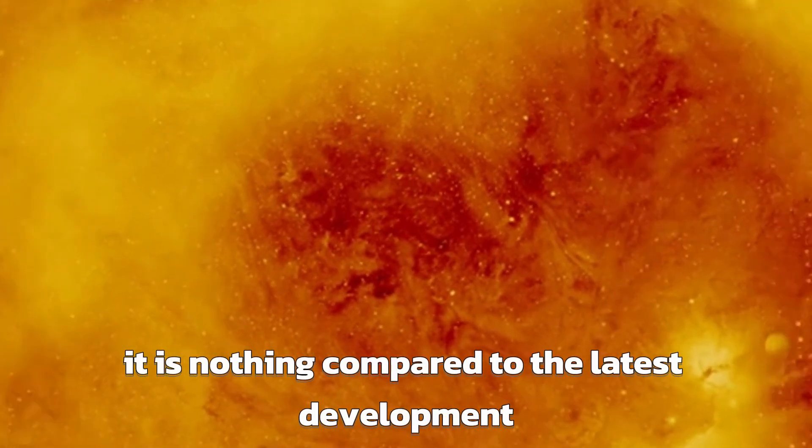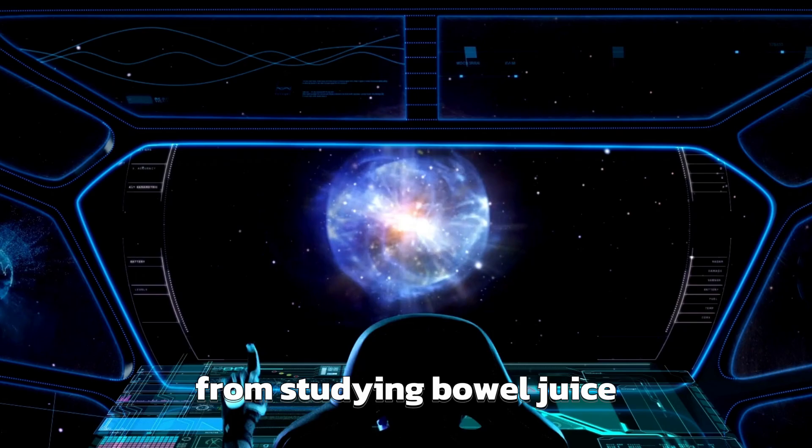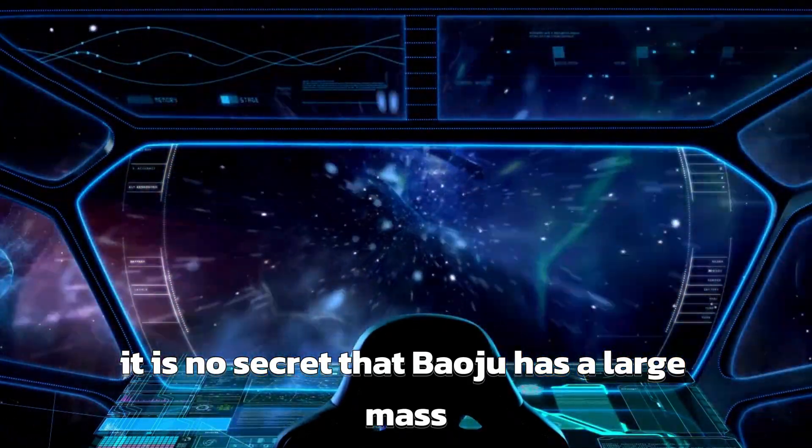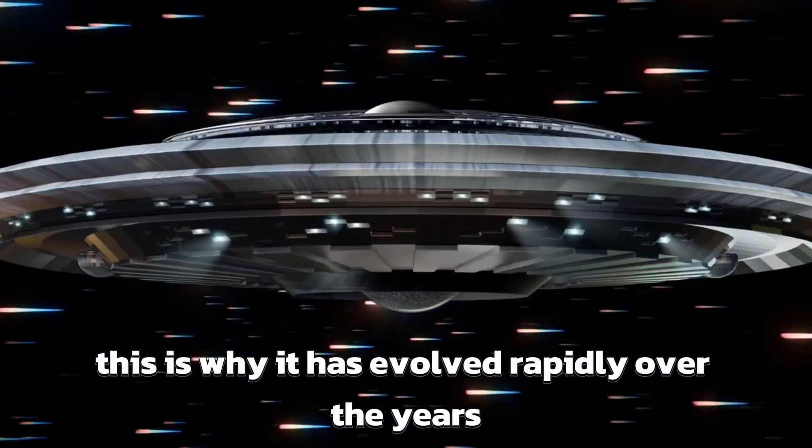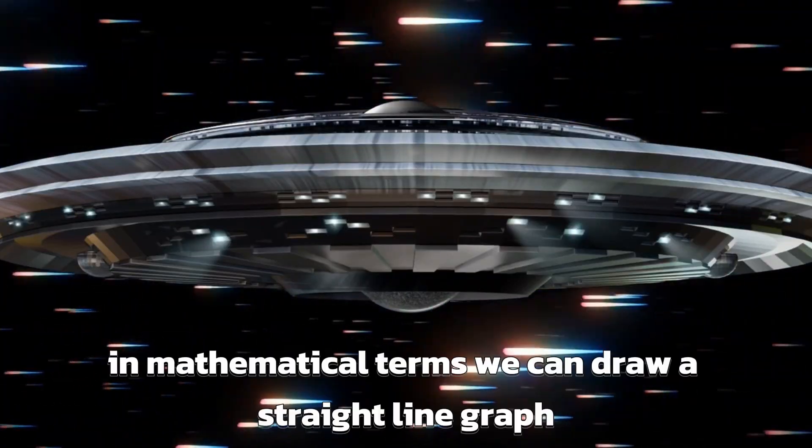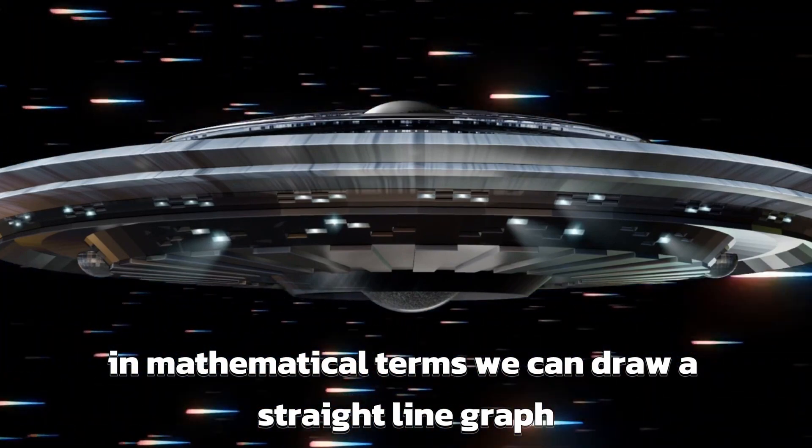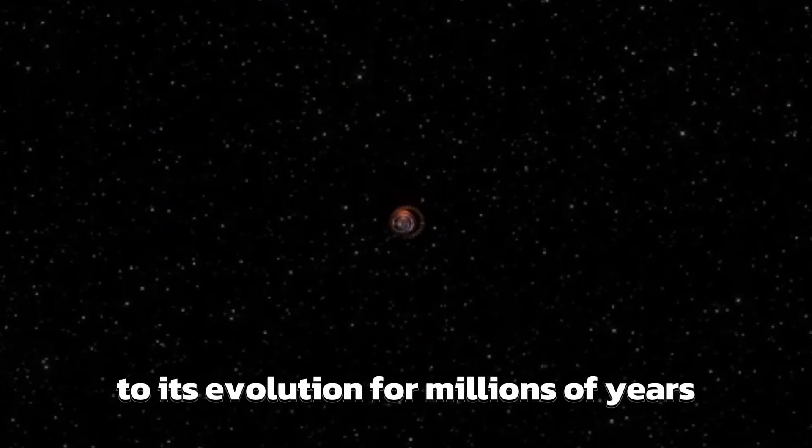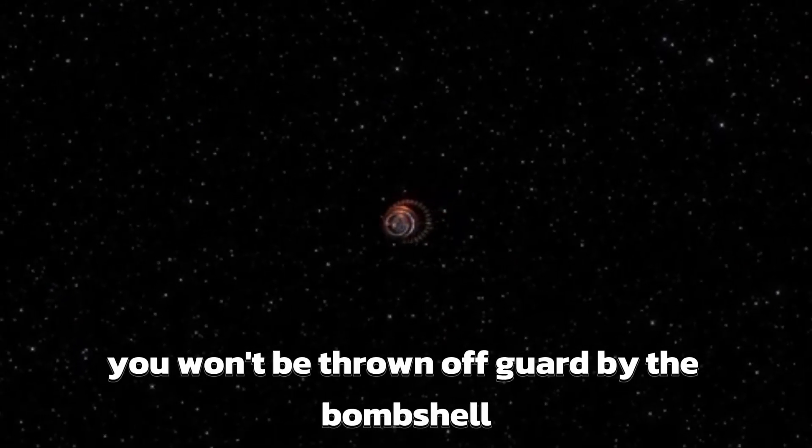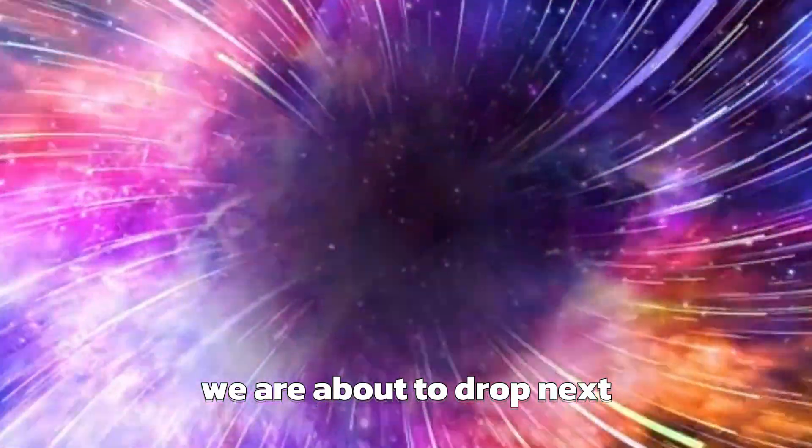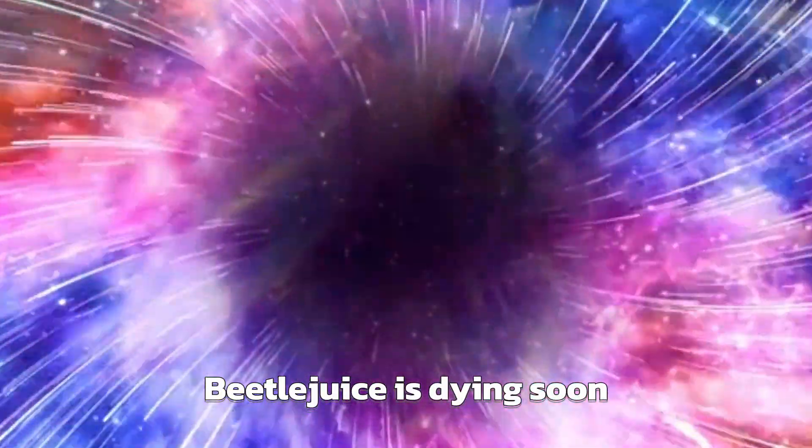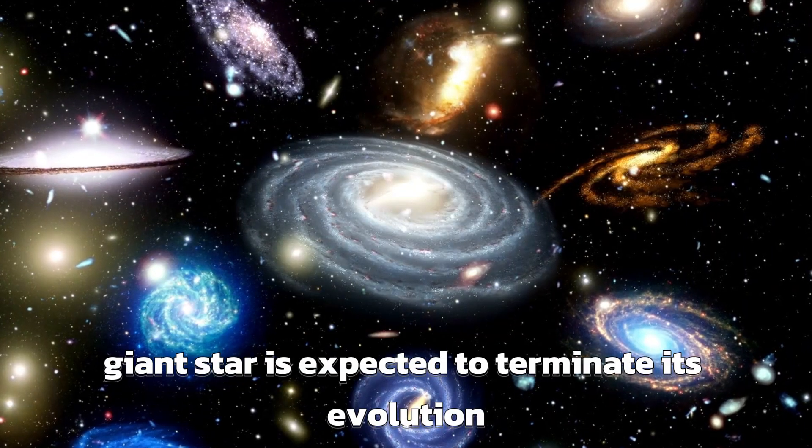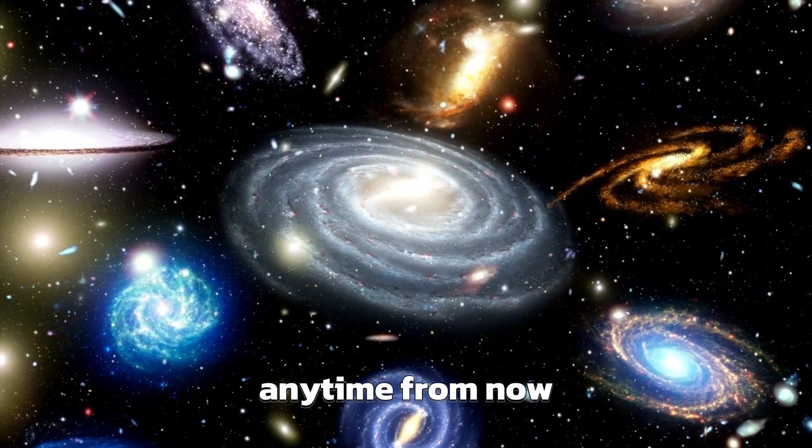As exciting as this mystery might sound, it is nothing compared to the latest development that scientists uncovered from studying Betelgeuse. It is no secret that Betelgeuse has a large mass, but what many don't know is that this is why it has evolved rapidly over the years. In mathematical terms, we can draw a straight-line graph from Betelgeuse's increasing mass to its evolution. Betelgeuse is dying soon. The red giant star is expected to terminate its evolution when it experiences a supernova explosion any time from now.